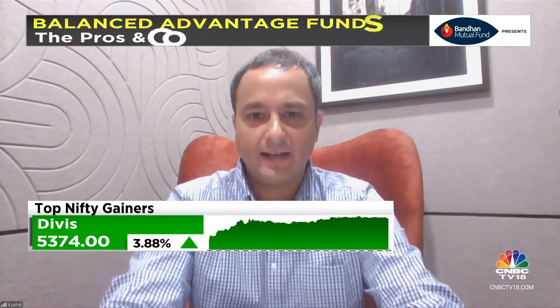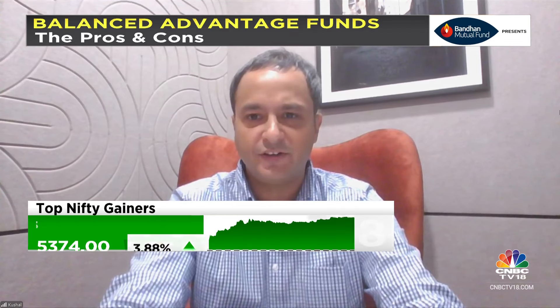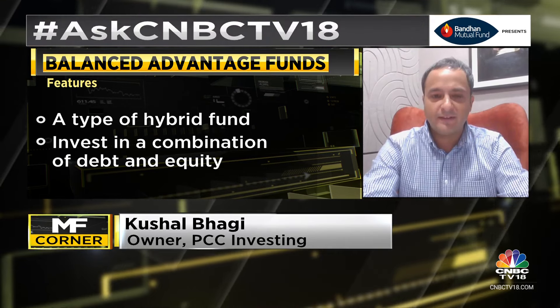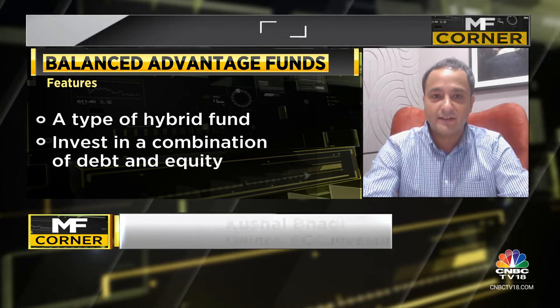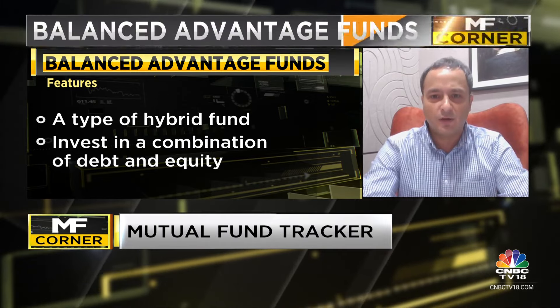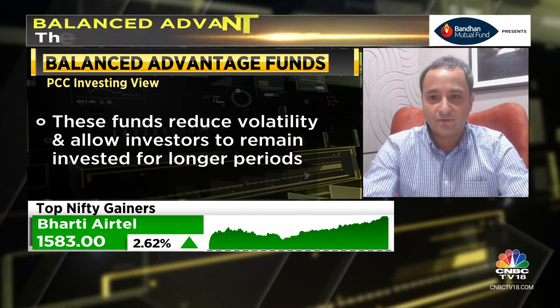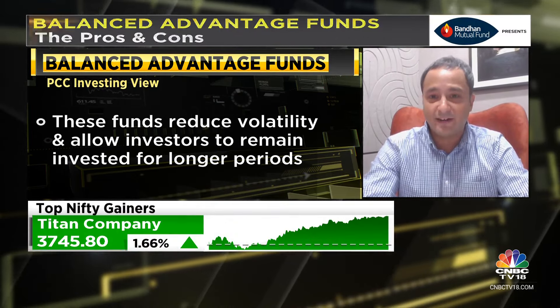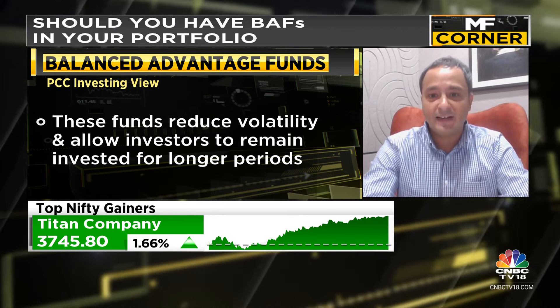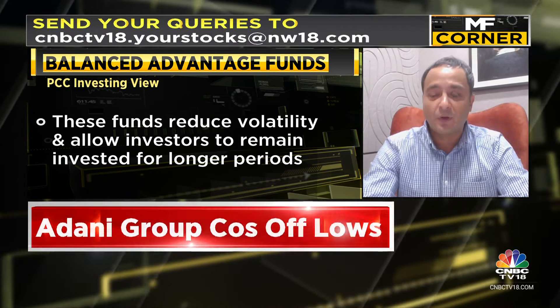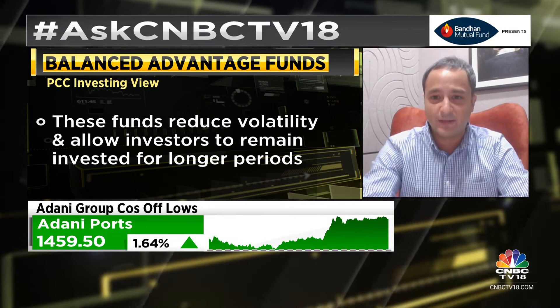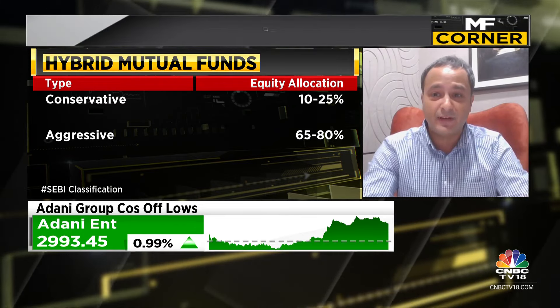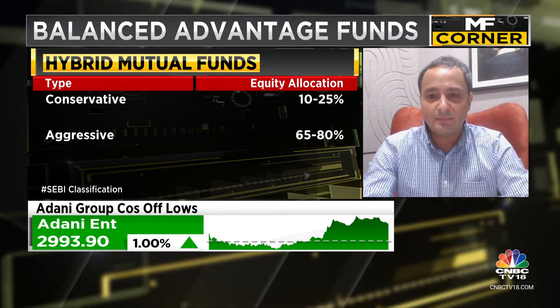Balanced Advantage Funds and Dynamic Asset Allocation Funds — we'll use these two terms interchangeably. They are hybrid funds that use a combination of asset classes: debt, equity, gold, and other commodities. The overarching purpose of hybrid funds is to reduce volatility, allowing investors to remain invested for longer periods because the drawdown in pure equity funds can be quite high. SEBI classifies hybrid funds into various types with defined rules — conservative hybrid funds invest 10–25% in equity, aggressive hybrid funds 65–80%, and multi-asset funds require at least 10% in a minimum of three asset classes.